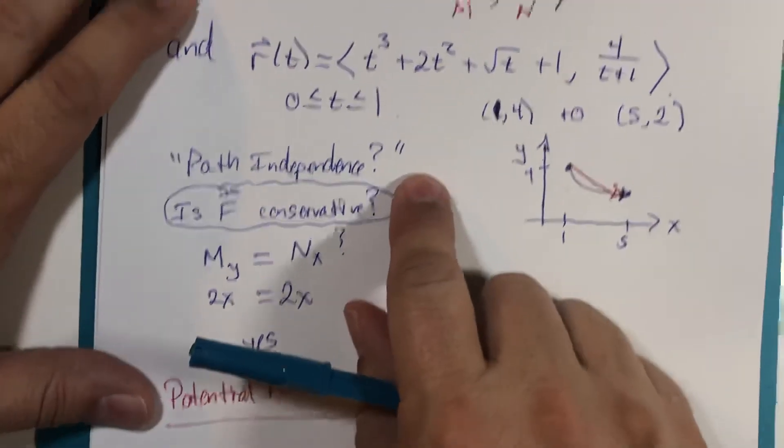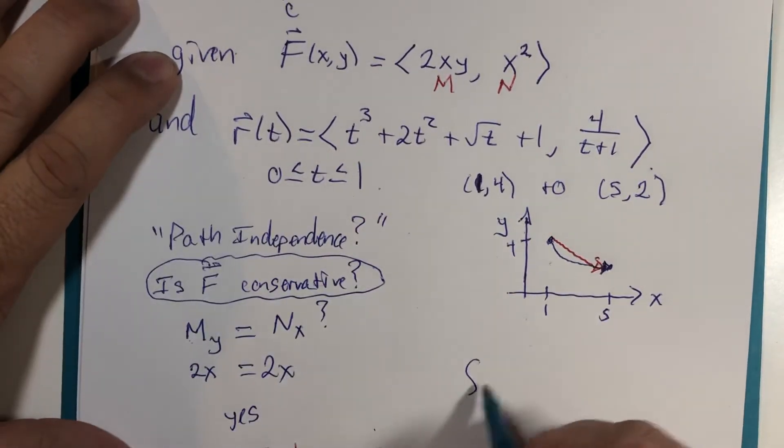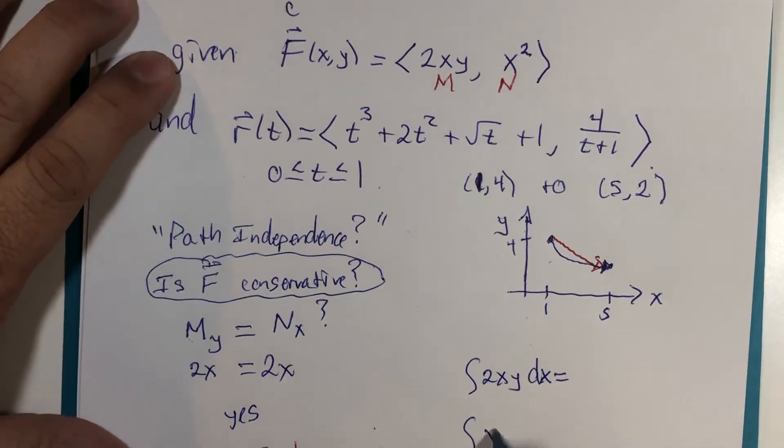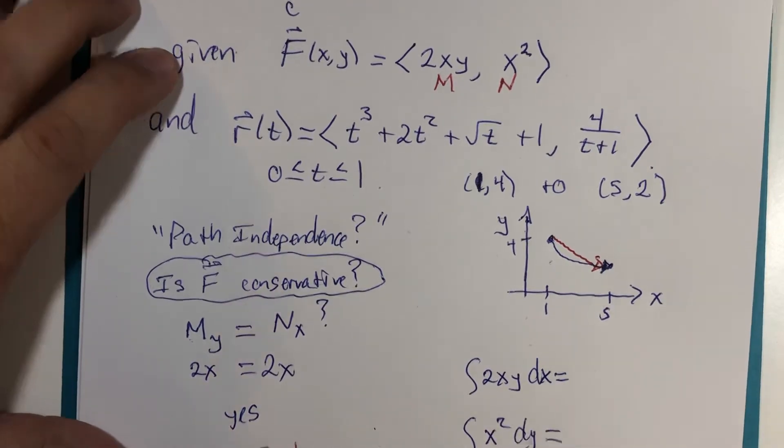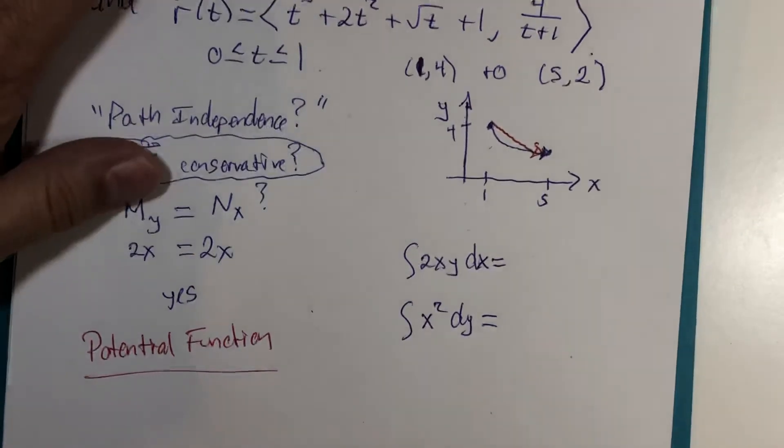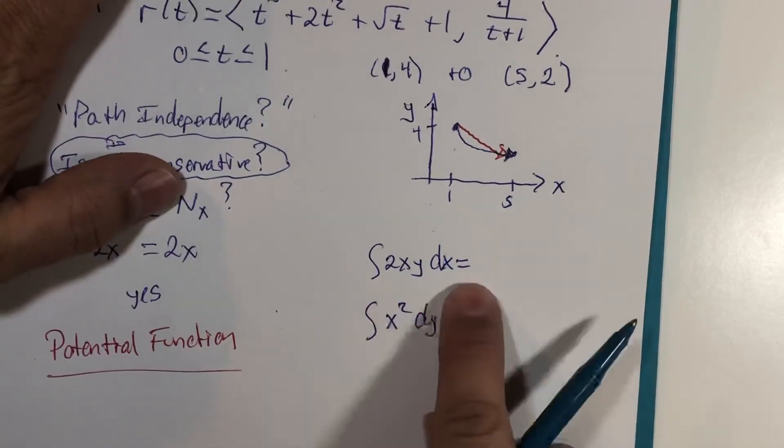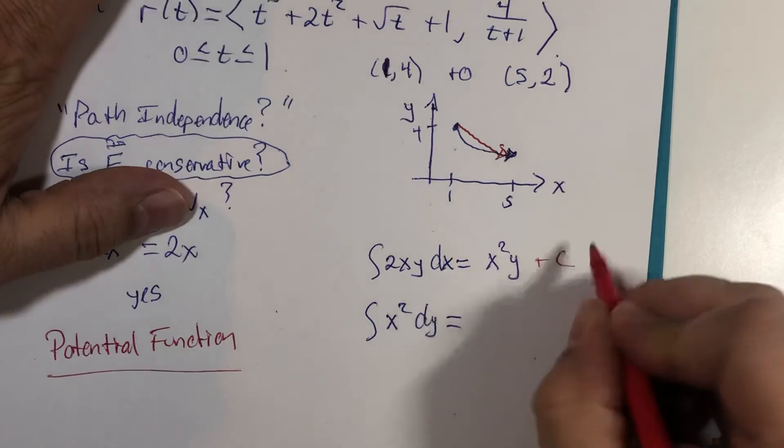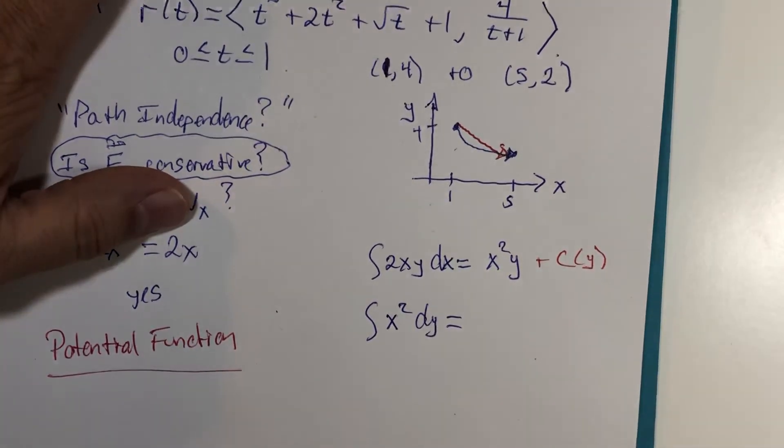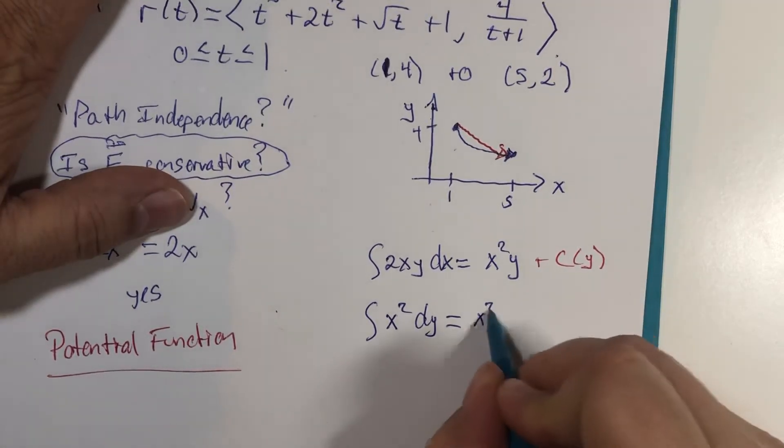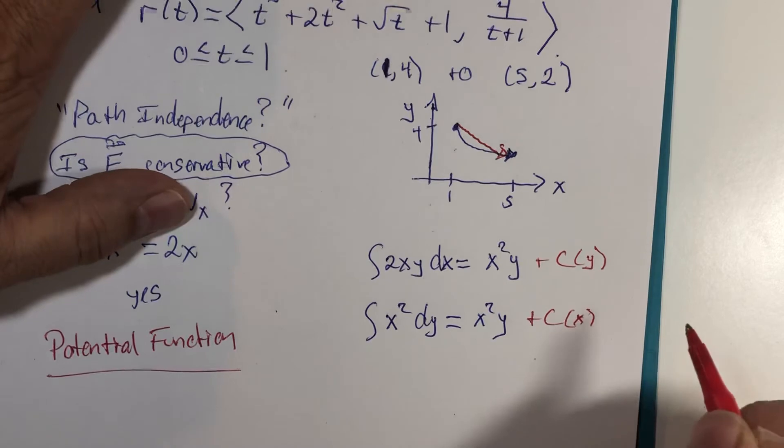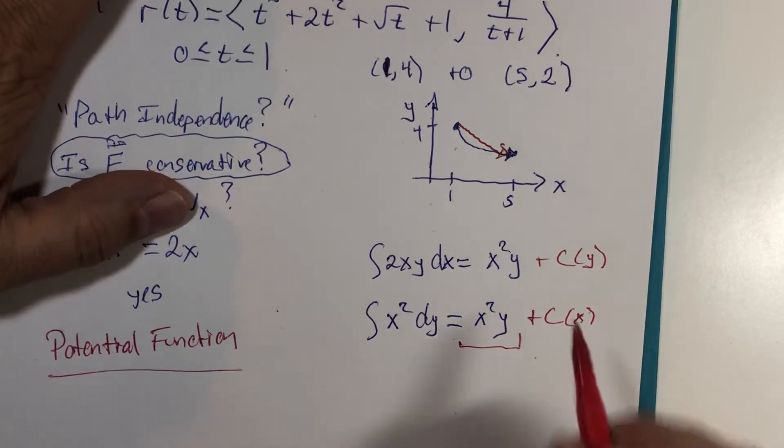So, we take the two components, 2xy was the x component, and we integrate with respect to x. And x squared was the y component, so we integrate with respect to y. And we build our potential function from those terms. If x is the variable, you end up with x squared times y, and then a constant that could have anything that doesn't have an x in it. Here, if you integrate with respect to y, you end up with the same term x squared y, but there could be any constant that has a not y in it, so x or a scalar. That means I only really have the one term in my potential function.